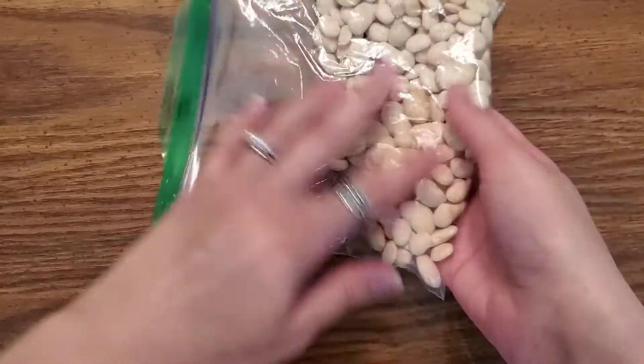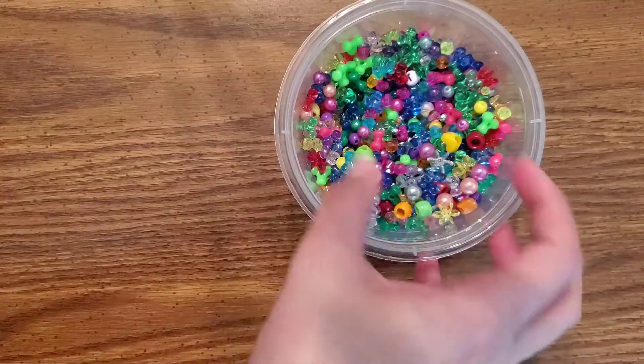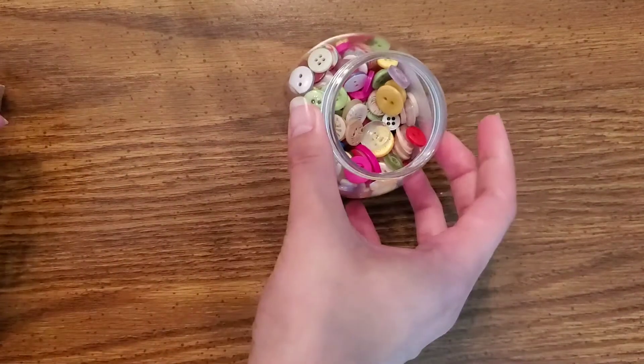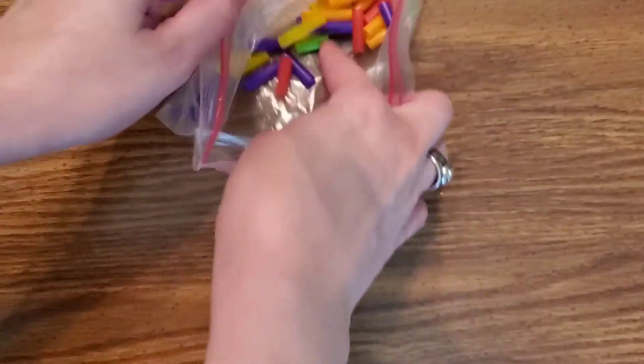So I came up with beans, beads, buttons, and straws. I cut up straws and made little pieces so I'm going to show you the different ways you can build.